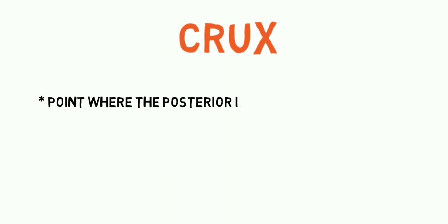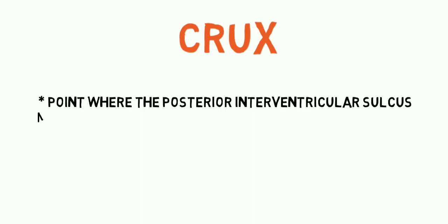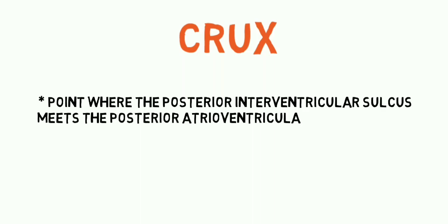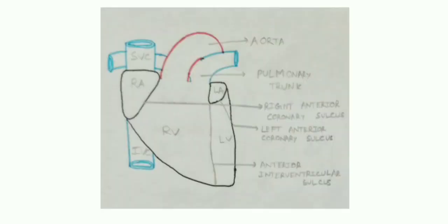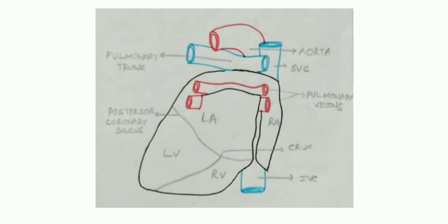Now, something known as the crux. Crux is the point where the posterior interventricular sulcus meets the posterior atrioventricular sulcus. In this picture you can see that the anterior interventricular sulcus separates the right ventricle from the left ventricle, and the right anterior coronary sulcus is present below the right atrium and the left anterior coronary sulcus is present below the left atrium. In the posterior aspect, the posterior coronary sulcus separates the atrium from the ventricle, and the posterior interventricular sulcus is the line present between the left ventricle and the right ventricle.